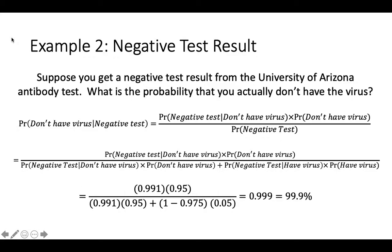This is not an accident. Tests like this are almost always designed to provide reliable negative results, because people who get negative results tend to walk away. If we are going to let people go about their lives, we want to be very sure that if they get a negative test result, they are really, truly negative. To do otherwise would be irresponsible, particularly for a virus like SARS-CoV-2, which can cause serious complications or even death.